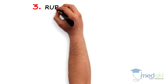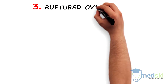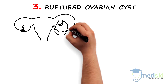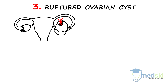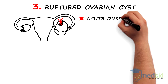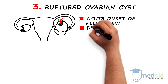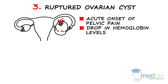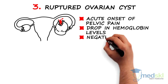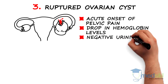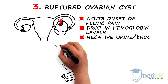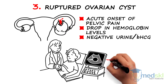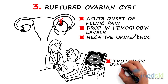Number three: ruptured ovarian cyst. Think of this if your patient has a sudden acute onset of pelvic pain with a drop in hemoglobin levels but a negative urine or serum beta-HCG. Ultrasound imaging is helpful to show a hemorrhagic ovarian cyst.